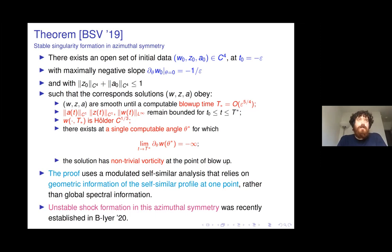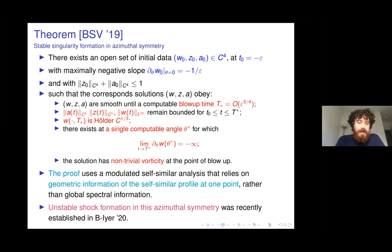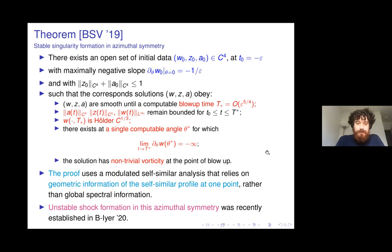This paper is a good starting point as it is where we begin building the machinery used in our later papers. We build a modulated self-similar analysis with a different flavor: it relies on geometric information of the solution and uses transport arguments, unlike much previous self-similar analysis work which tends to rely on linear stability of a linearized operator. We don't use spectral information of a linearized operator.